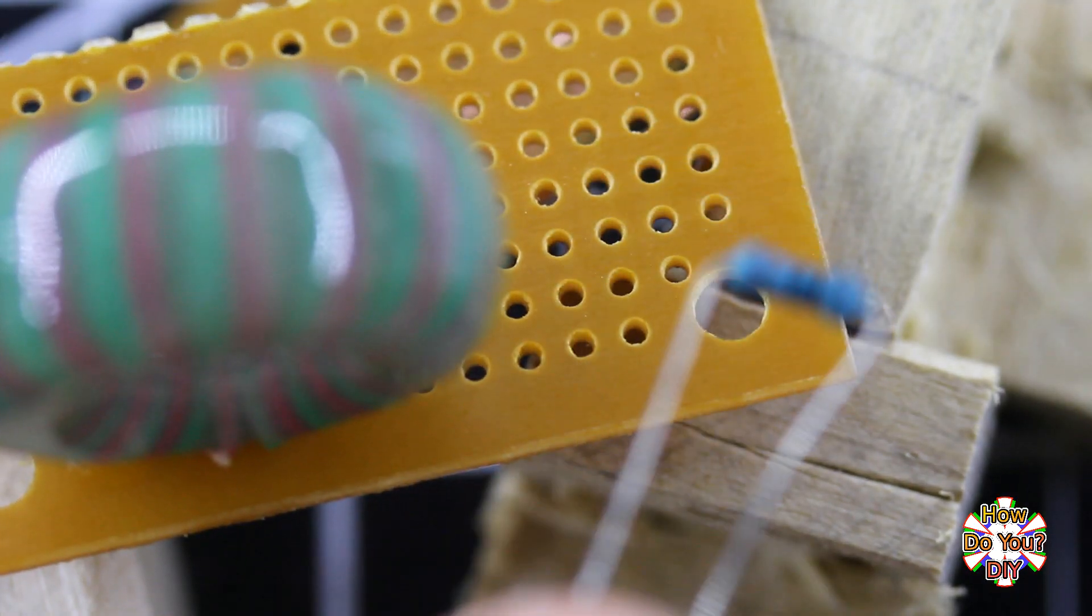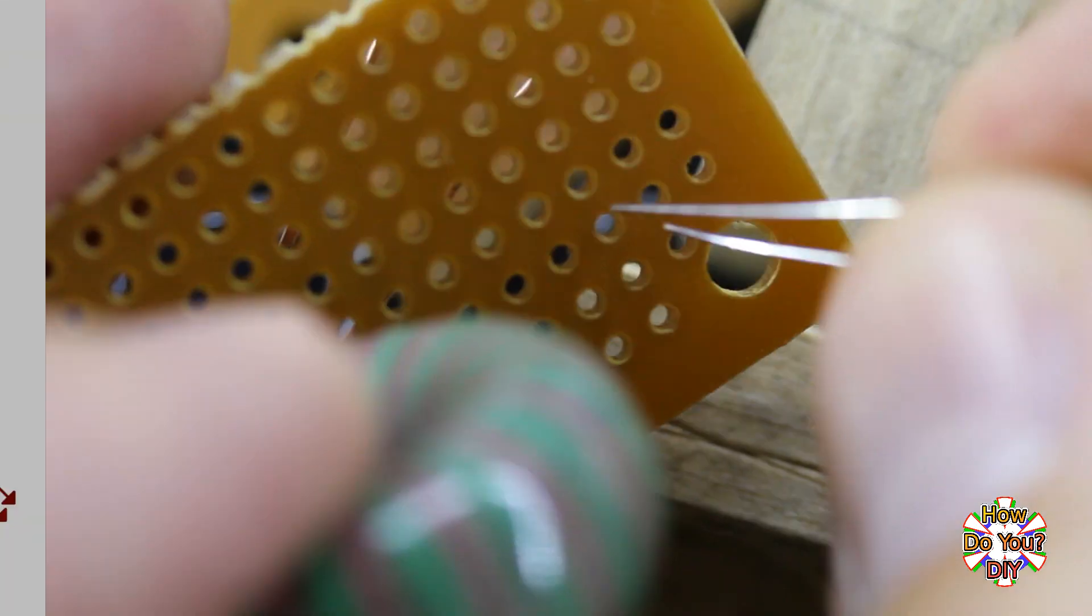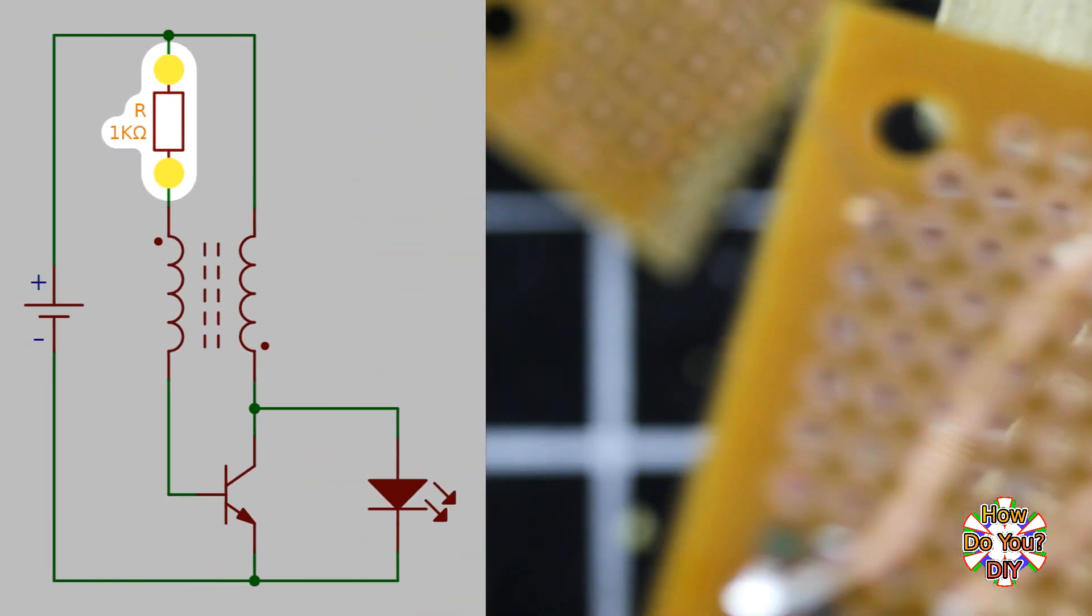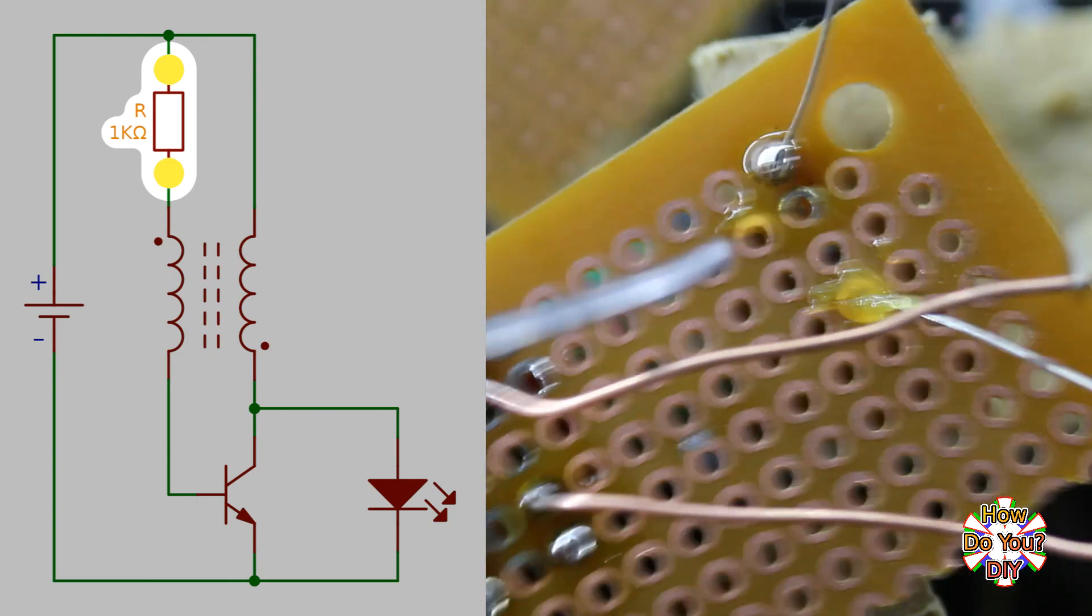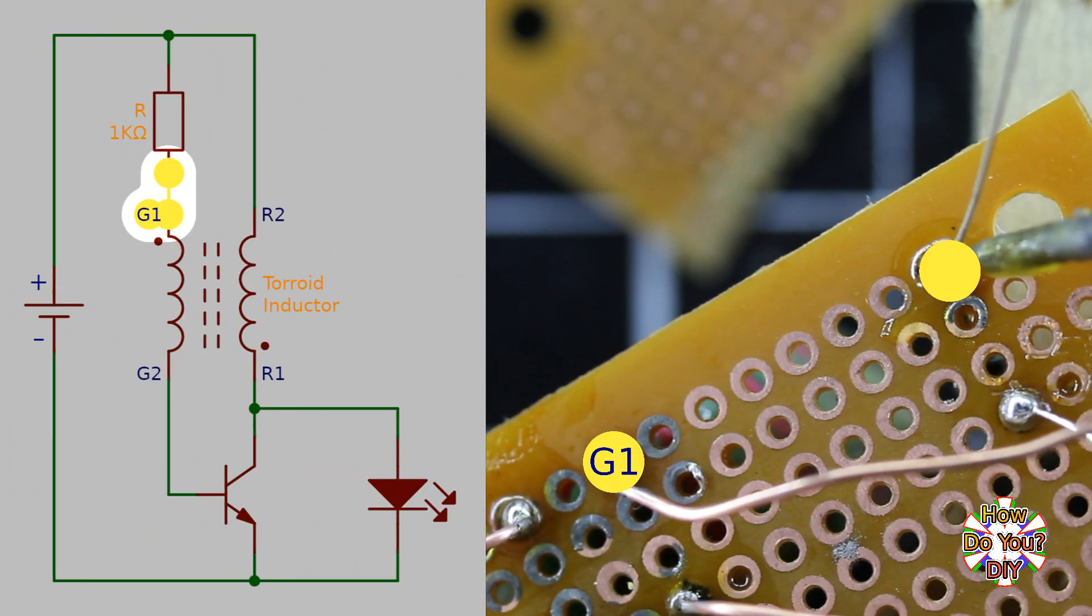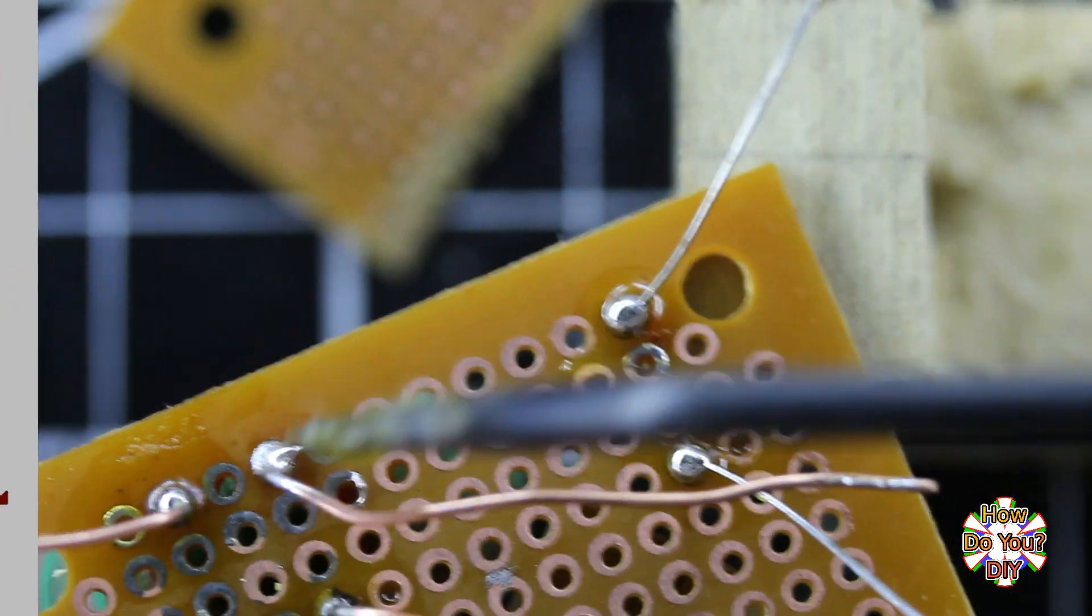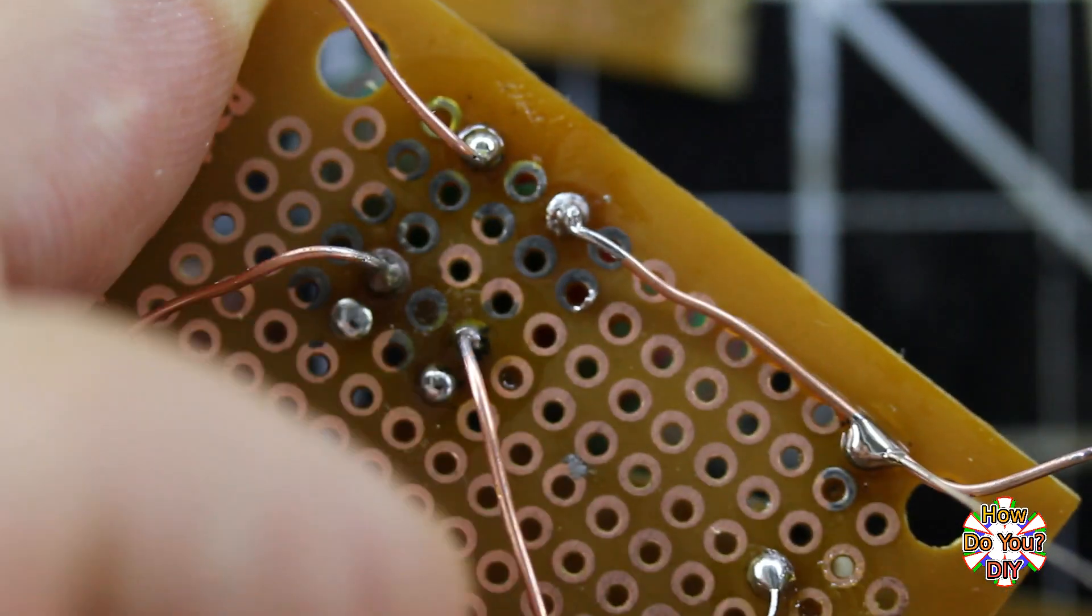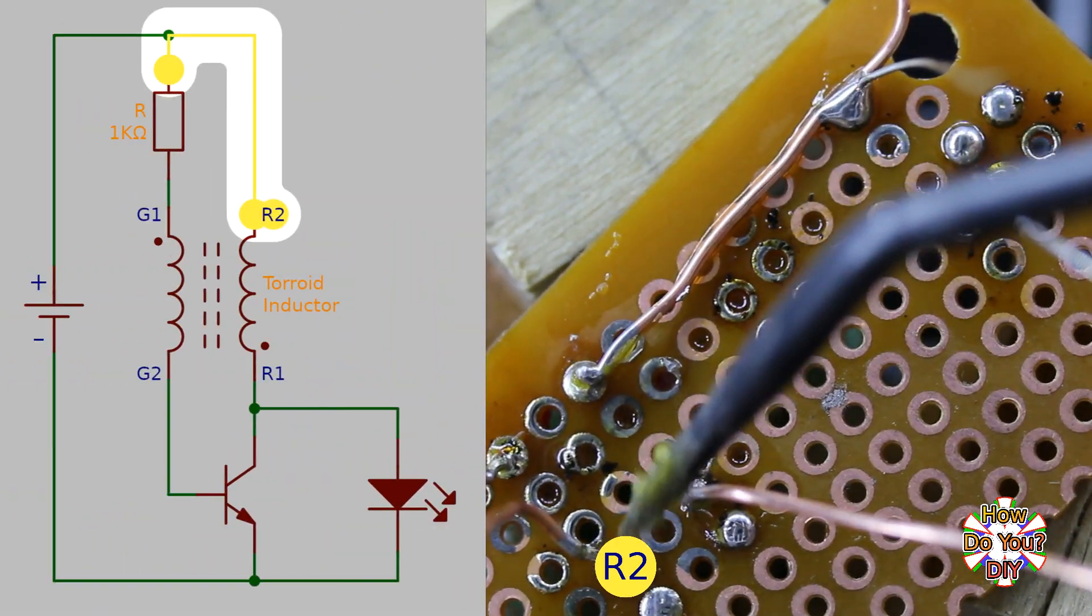The second part that I'm adding is this 1K resistor. I want to connect G1 to one side of the resistor, and it does not matter which side of the resistor we connect it to. The other side of the resistor needs to connect to R2.